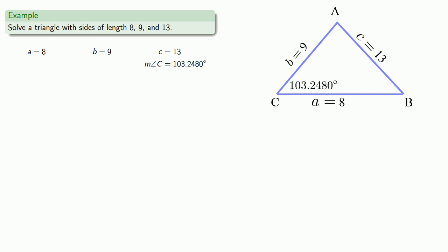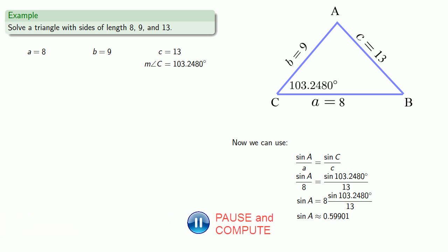Well now we have two sides and an angle, which means we can use the law of sines. So we'll use our first equation from the law of sines, substitute in our values, and again we get down to the point where the sine of some angle is approximately some numerical value, so again we have to use the inverse sine function to find our angle is about 36.7988 degrees.